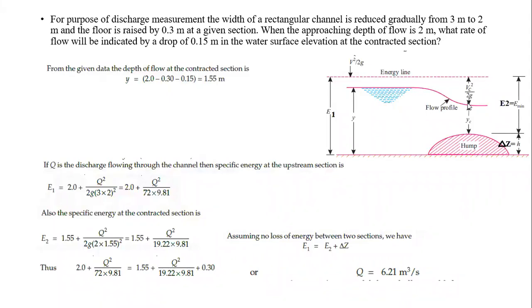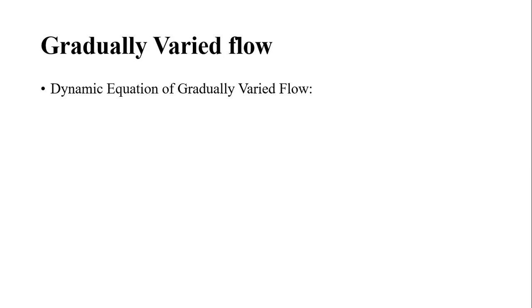In the previous example, the hump height was calculated; here, the hump height was given and the discharge was calculated. Now we move to Gradually Varied Flow (GVF). We have already discussed what GVF means and what conditions are required for gradually varied flow to exist.